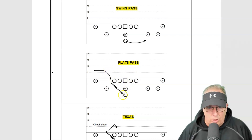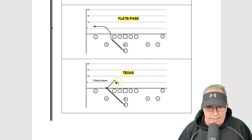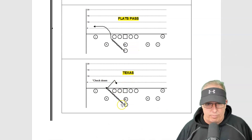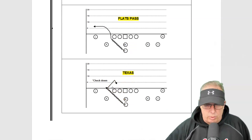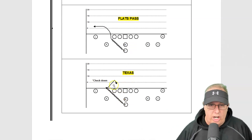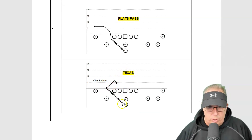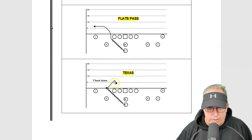You can also go '30 flats' or 'flats weak' — that's what we call a flats pass. So you can do a tailback flats Texas route. On the Texas route, you can either have him check down or keep going — he comes down, looks inside, and either keeps going up or checks down.